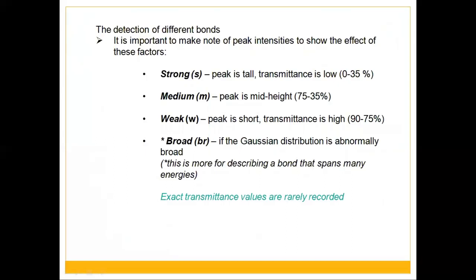Peak intensities in IR spectra are described using standard notation. Strong (S): the peak is tall, transmittance is 0–35%. Medium (M): peak is mid-height, transmittance is 35–75%. Weak (W): peak is short, transmittance is 75–90%. Broad (Br): the Gaussian distribution of the peak is abnormally wide, spanning many energies. Exact transmittance values are rarely recorded.